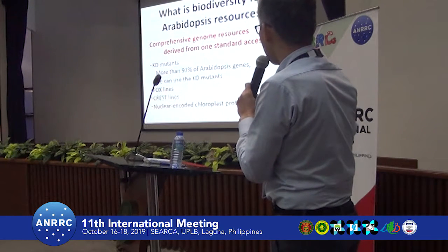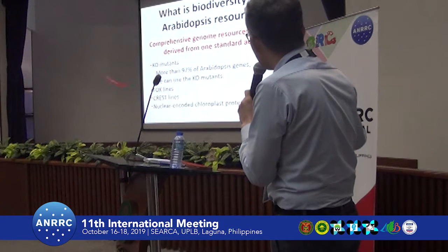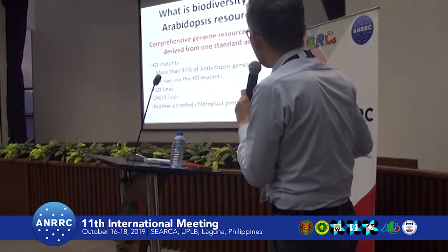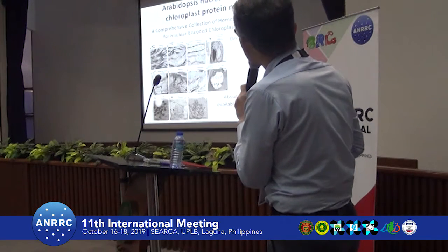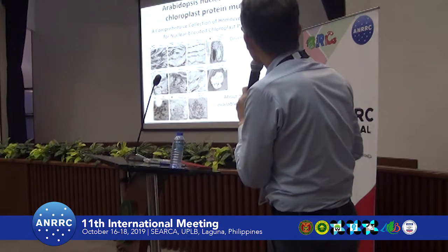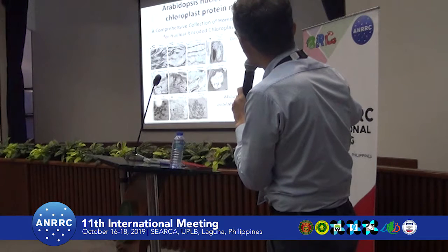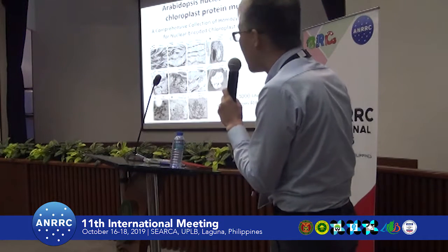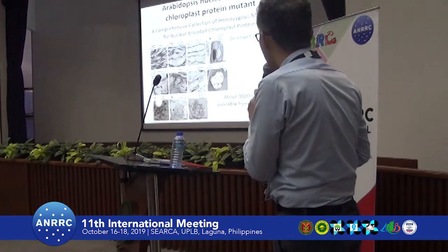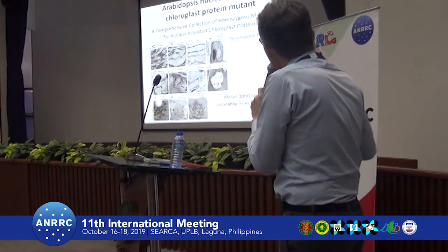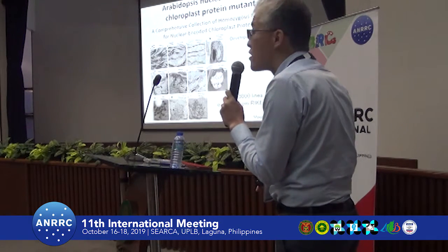We also use the FOX hunting lines and CRES-T lines. Recently we have also developed a comprehensive collection of homozygous knockout mutants for nuclear-encoded chloroplast proteins — about 3,000 lines are available from the RIKEN BRC. This kind of comprehensive mutant collection is also one form of biodiversity.